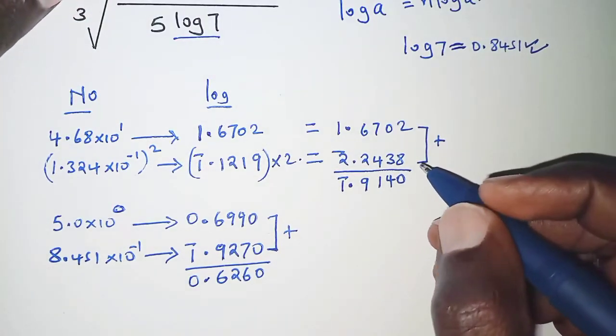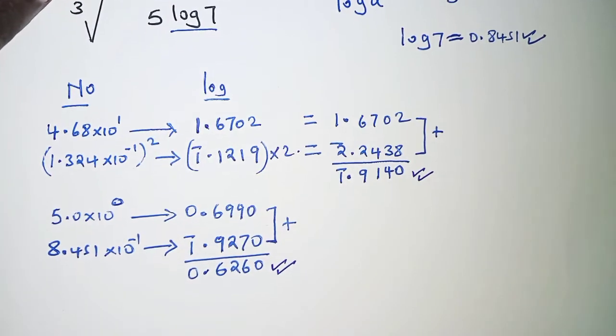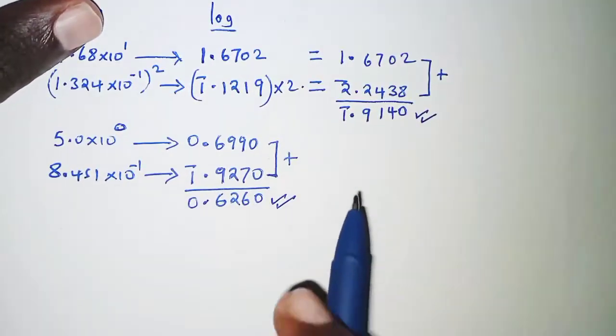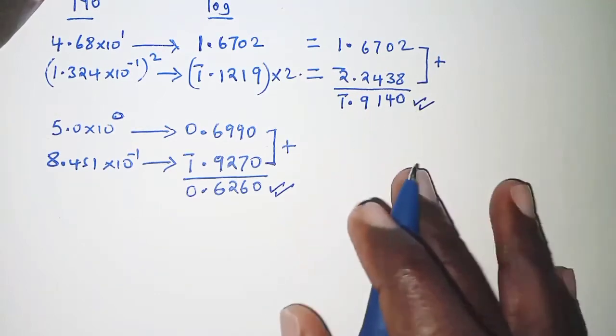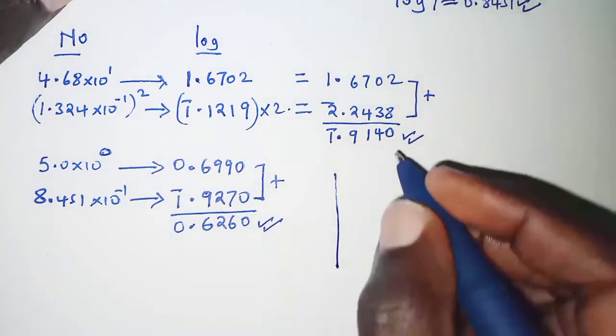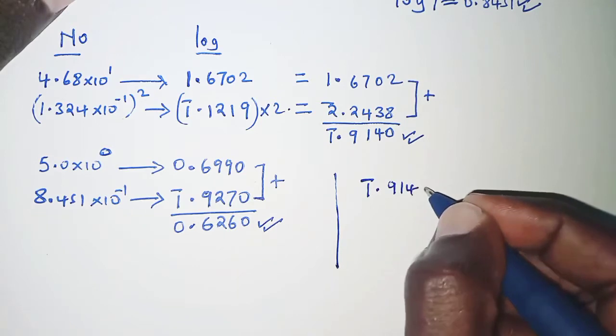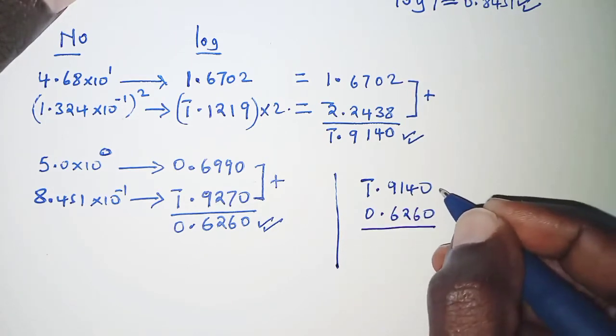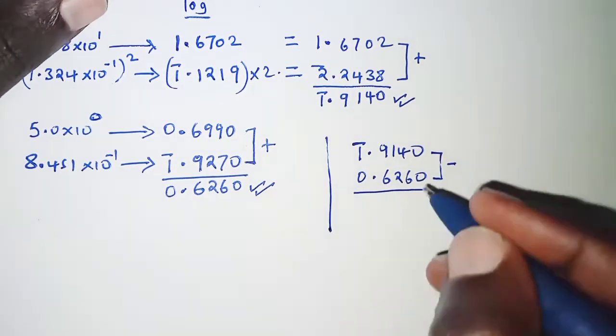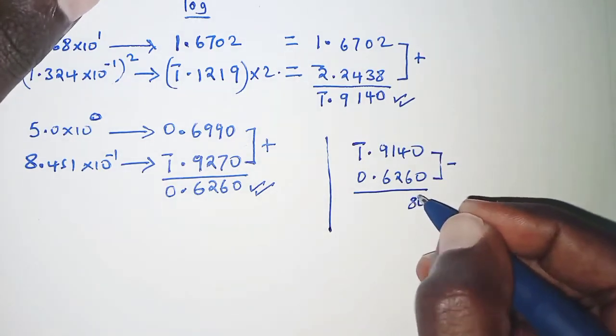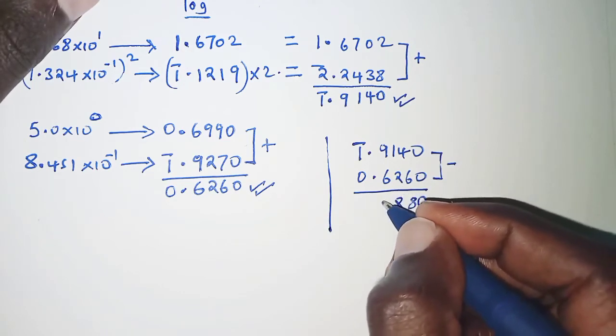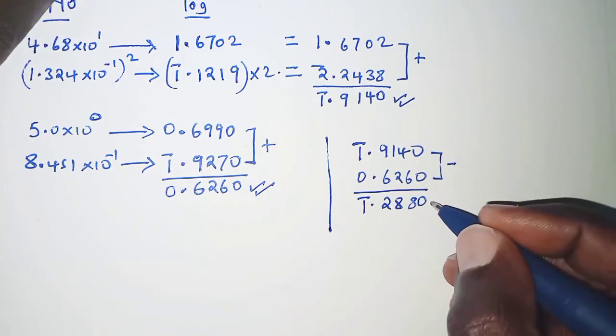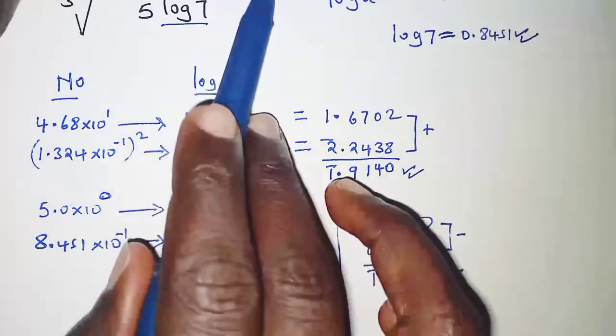We have under the root sign the numerator and the denominator. Since it's division here, that would imply subtraction of their logarithms according to the laws of logarithm. We have 1.9140 for the numerator minus 0.6260 for the denominator. When we subtract, we will have bar 1.2880. This is the logarithm of everything that we have under the root sign.